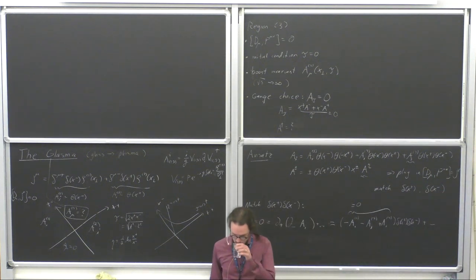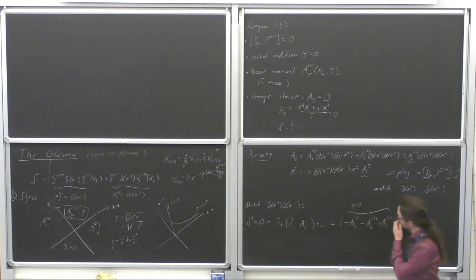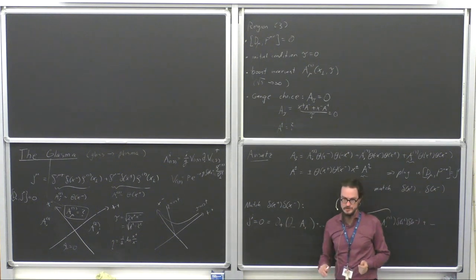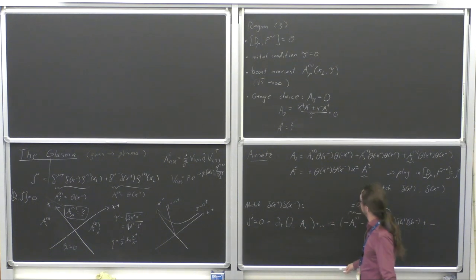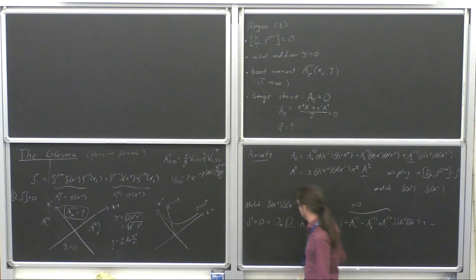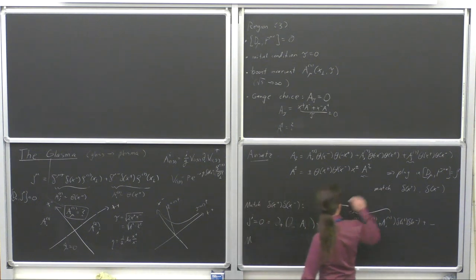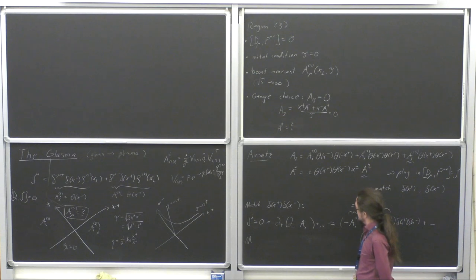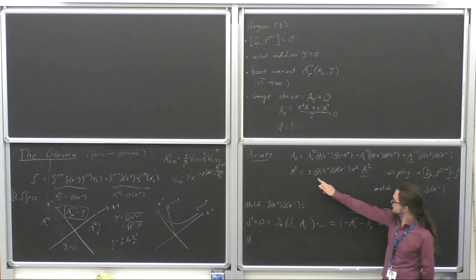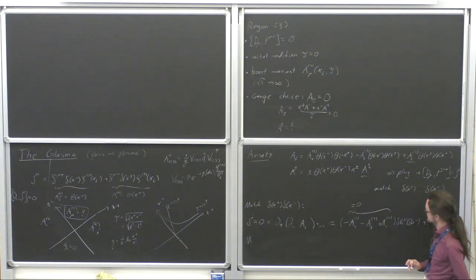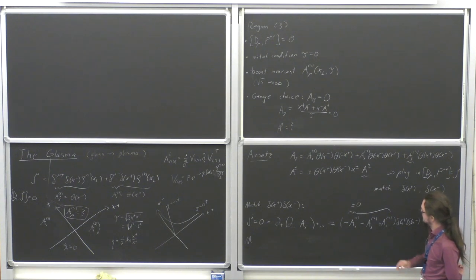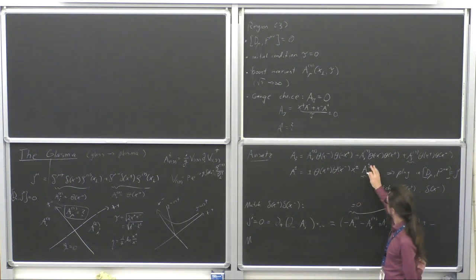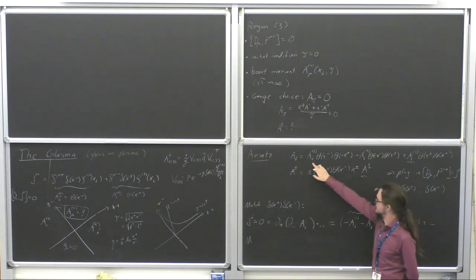Then I will need to go a little bit further to get the other initial condition. I have an initial condition for A^i, but I still need an initial condition for A_eta. For that I need to look at contributions where not both of my derivatives are acting on the theta functions — some derivatives are acting on the gauge fields and only one is acting on the theta functions.